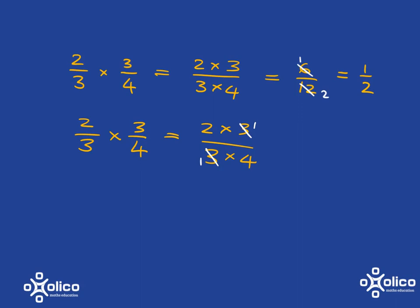You can also divide the top by 2 and you can divide the bottom by 2. Now there's nothing more that you can divide into top and bottom, so now you do the multiplying and you'll get 1 over 1 times 2 is 2.